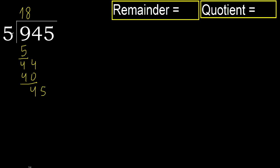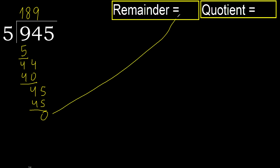45. 5 multiplied by 9 is 45 — it is not greater. Subtract. That is not a remainder, therefore finish it.